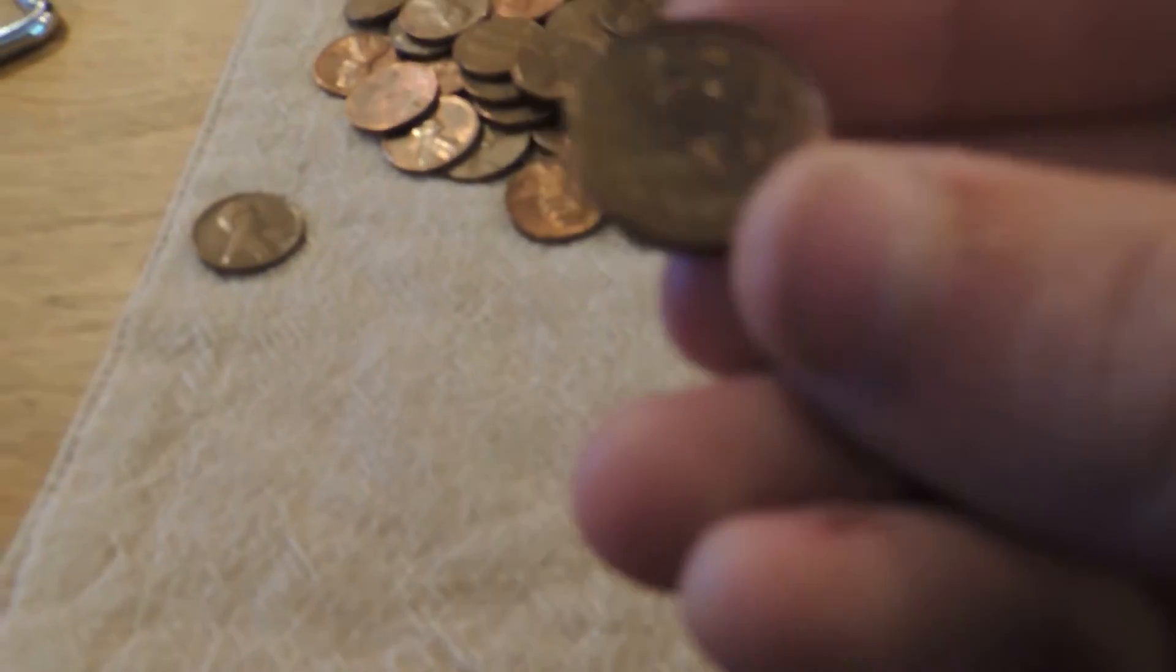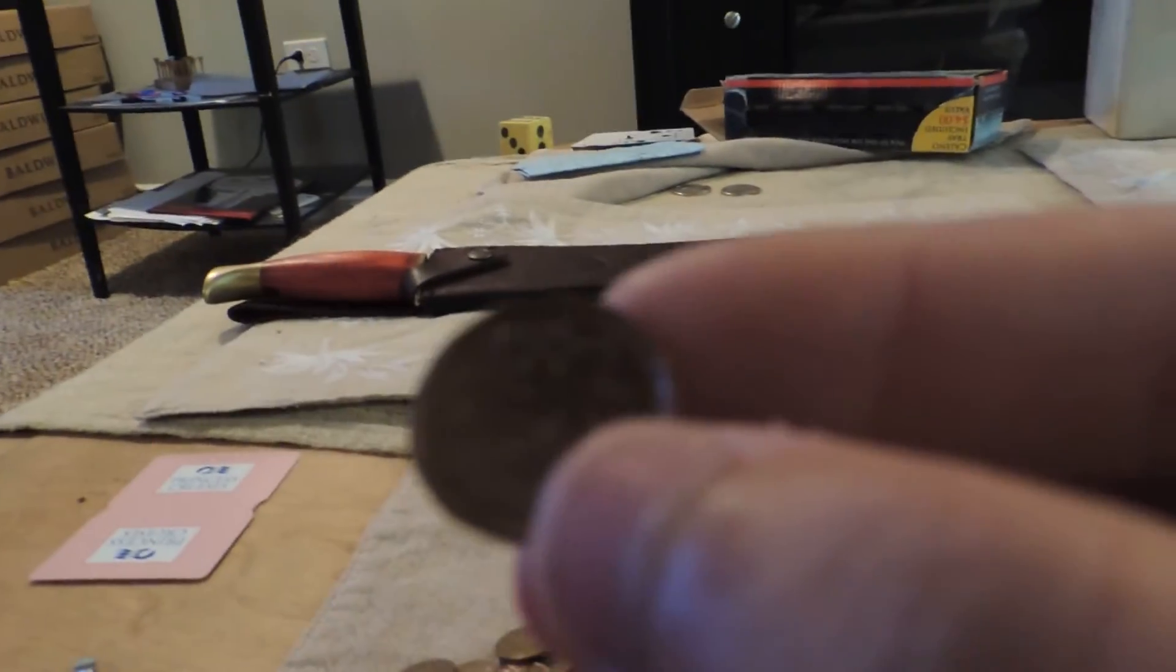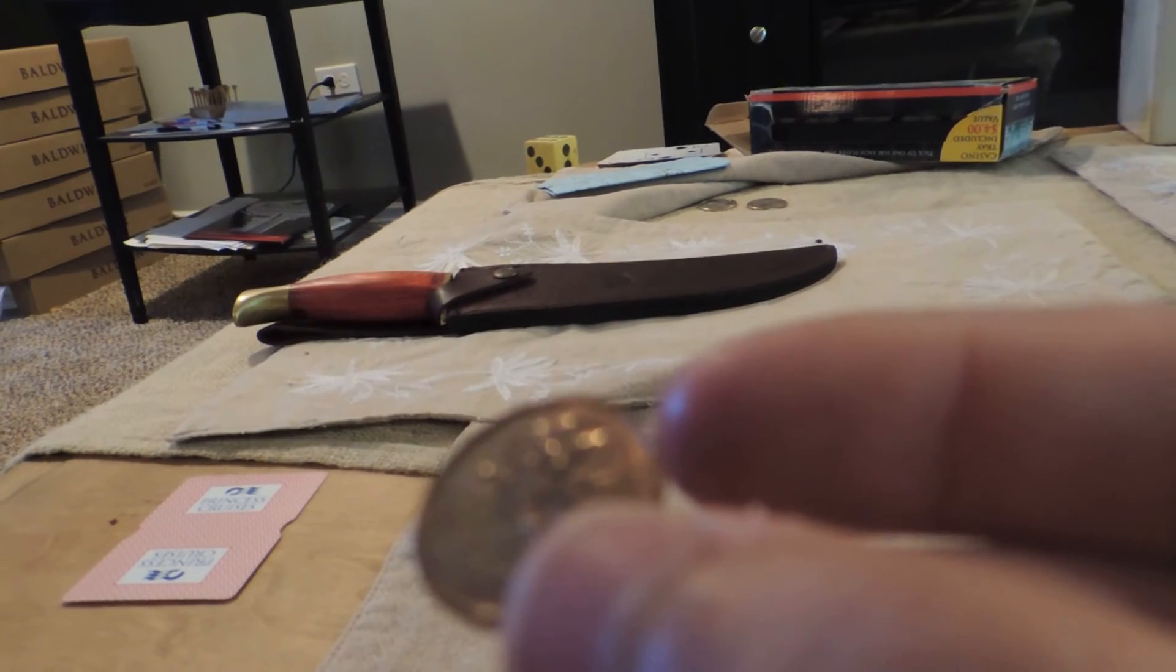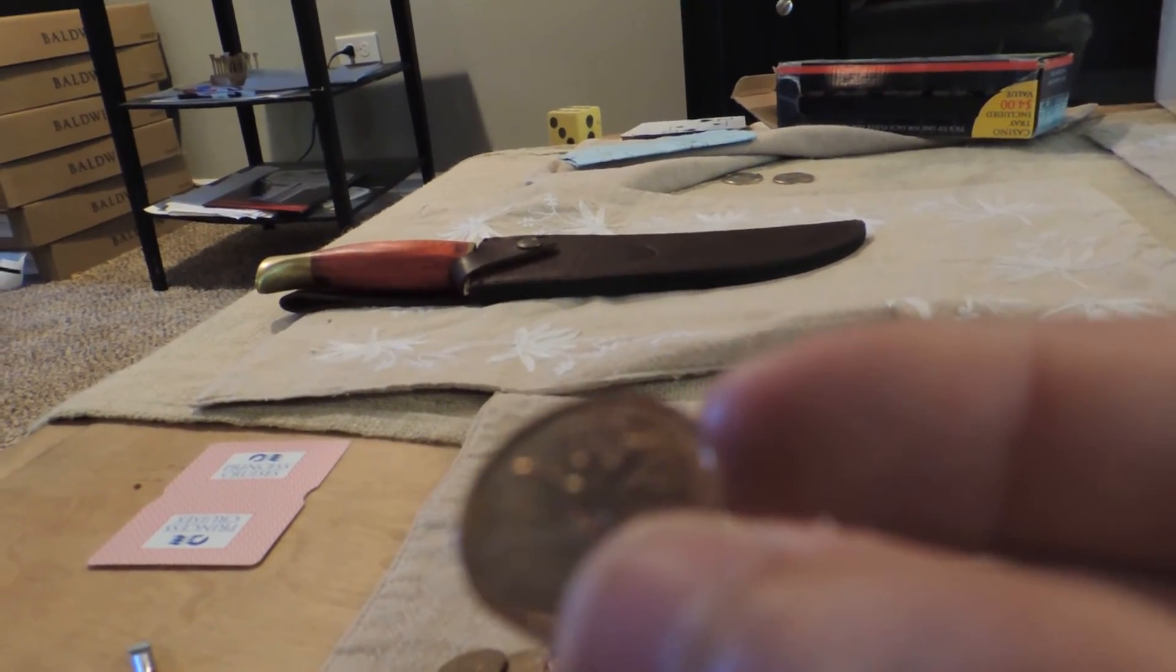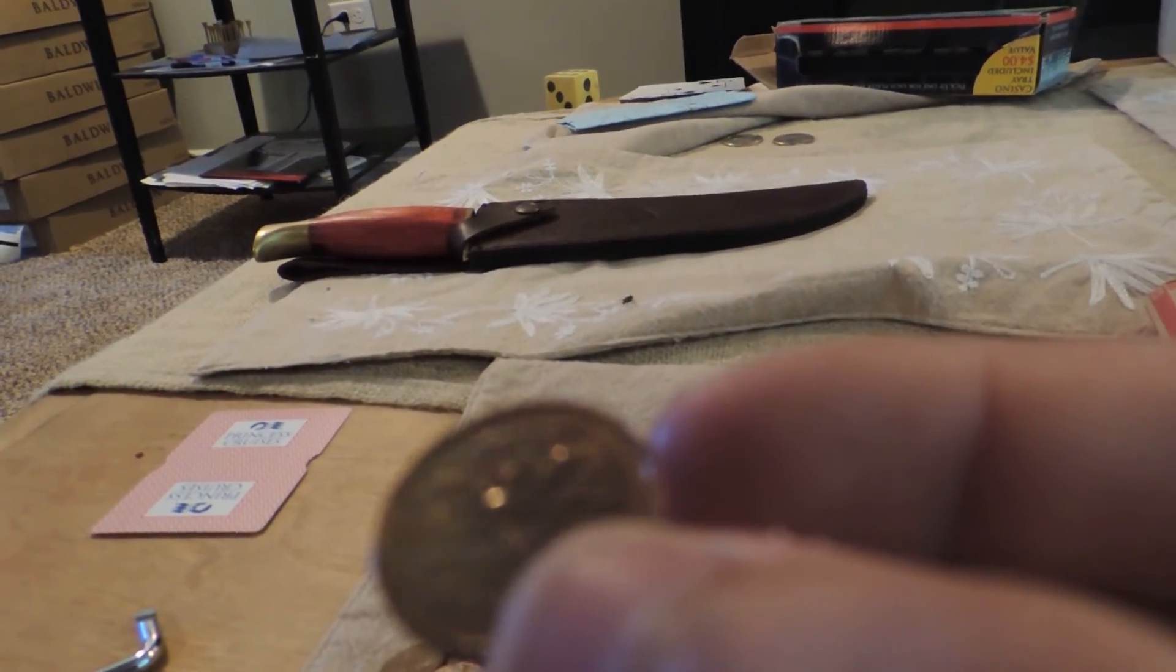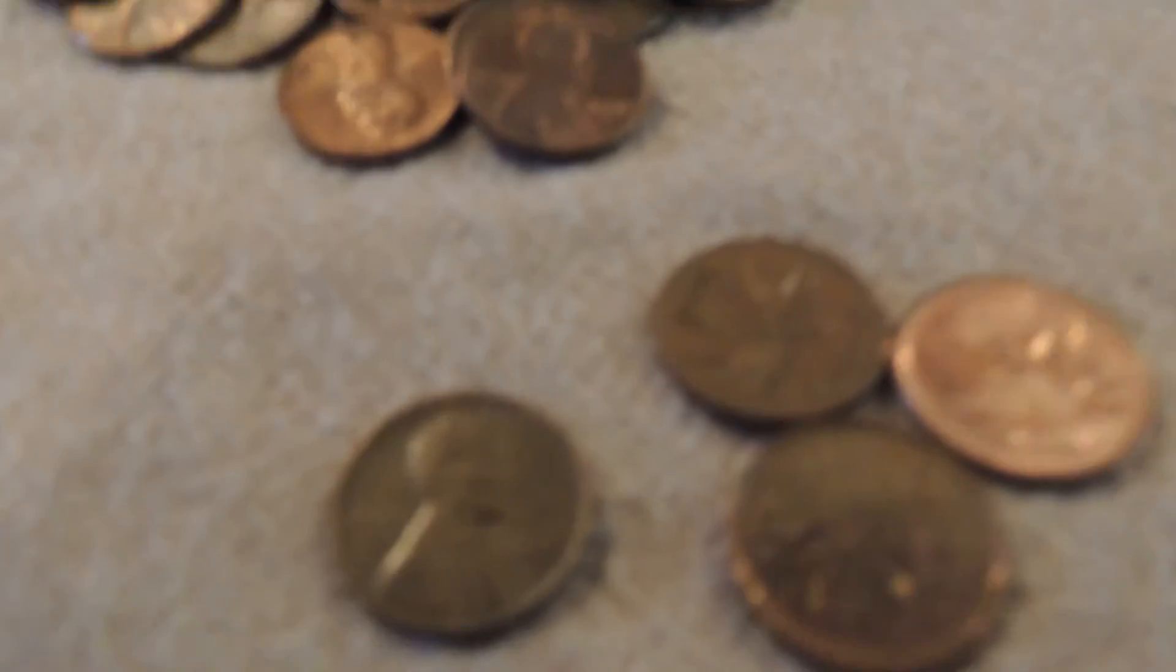What's this? Oh, this is a commemorative it looks like. What's that say? It says 1867 to 1992, and the one wheat penny I got this time is a 1955 D.